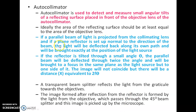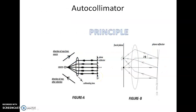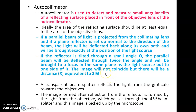If a parallel beam of light is projected from a collimating lens and a plane reflector is set up normal to the direction of the beam, the plane reflector is kept at 90 degrees. The light will be reflected back along its own path and will be brought exactly to the position of the light source. When the plane reflector is tilted through a small angle theta, the parallel beam will be reflected through twice the angle and will be brought to a focus on the same plane as the light source but to the side of it. The image will not coincide, and there will be a distance equivalent to 2Fθ, where O dash = 2 × F × theta. F is the focal length — the distance between the light source and the collimating lens — from which theta can be measured.